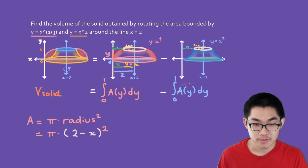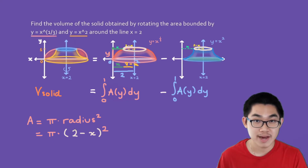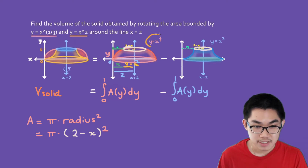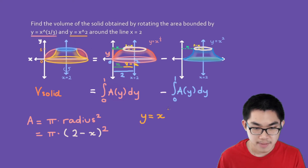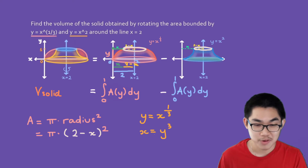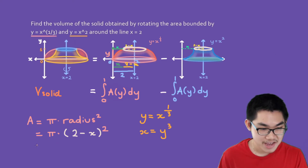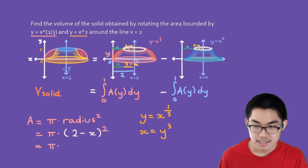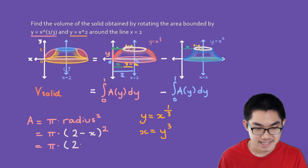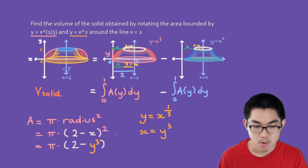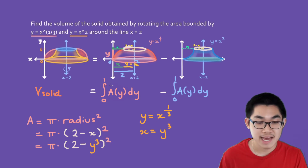Now, since we are integrating with respect to y, we need to rewrite the area in terms of y. We know that this function is y equals x to the power of 1/3, which means that x equals y to the power of 3 — you just take both sides to the power of 3. So the area is the same as π times (2 minus y³) squared, and we are ready to put this back into our integral.